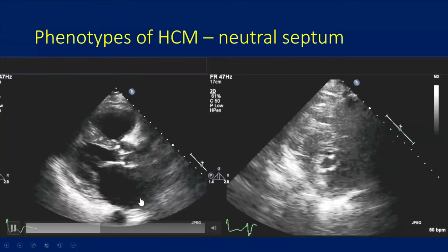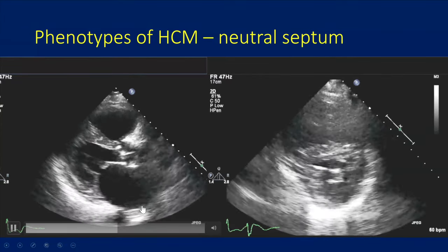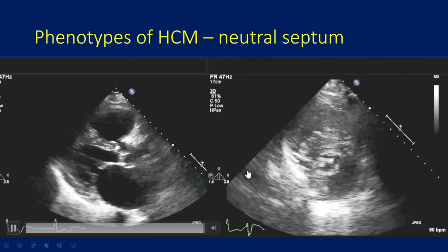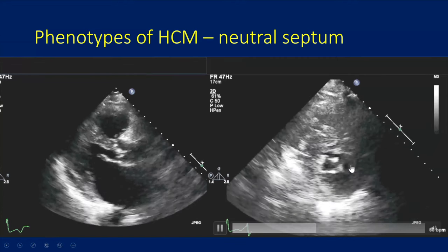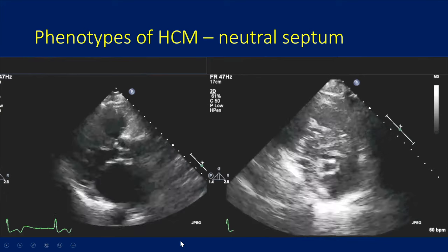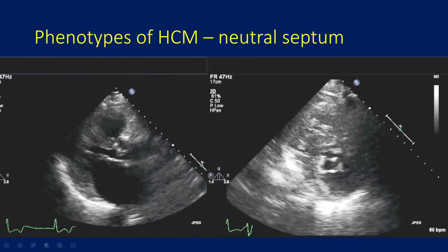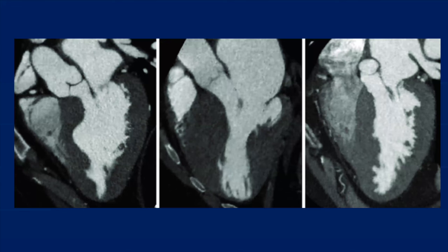The neutral septum can be a bit more subtle. As we can see, there's diffuse thickening everywhere through the LV with no particular focal thickening — this one can be pretty easily missed as just hypertensive heart disease. On MRI we appreciate this a bit better. Here you can see the sigmoid septum variant, the reverse curve variant, and the neutral septum variant. In the neutral septum the septum is straight and the LV cavity is not distorted; in the reverse curve the LV cavity has significant distortion with a convex shape; and in the sigmoid the LV cavity is more oval. There's lots of thickening everywhere in the LV.